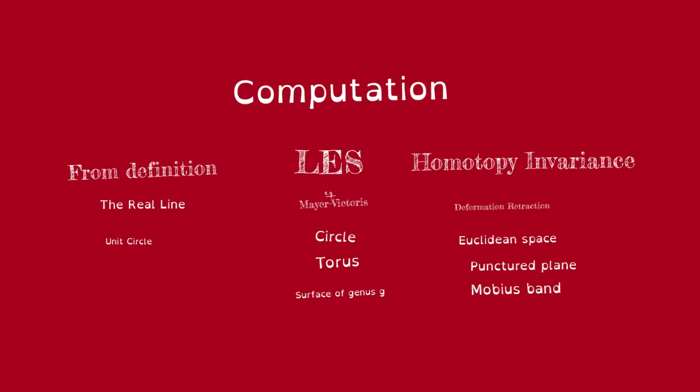Previously, we practiced computation of de Rham cohomology using definition by computing the cohomology of the real line. Now, in this video, we're going to use the definition of de Rham cohomology to compute the cohomology of the unit circle. That is not really the optimal way. Later, we will see how we can compute these cohomology groups of the circle using the Mayer-Vietoris sequence. But for now, let's just practice using the definition.